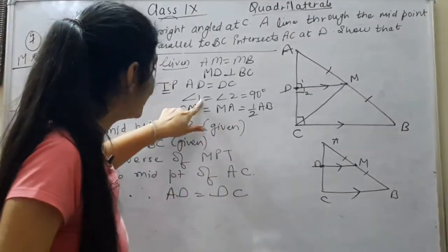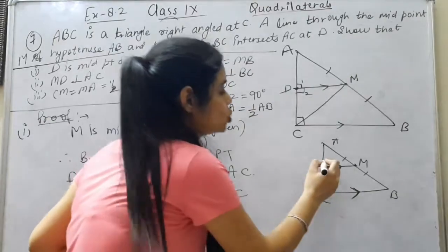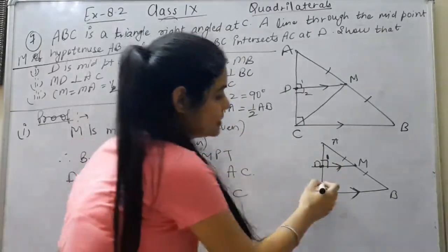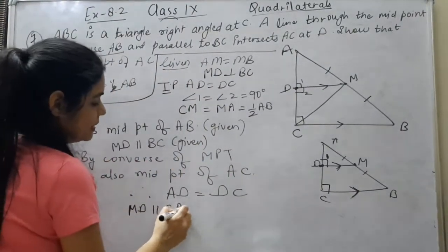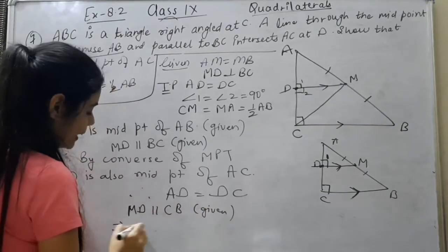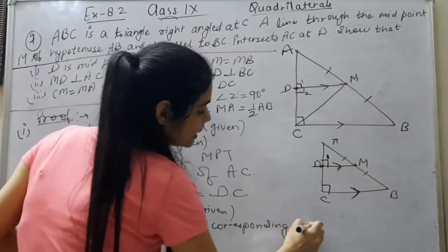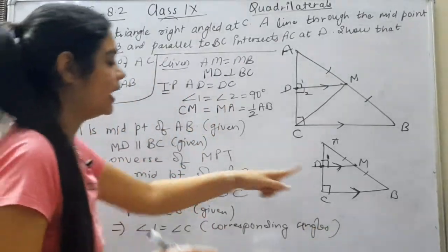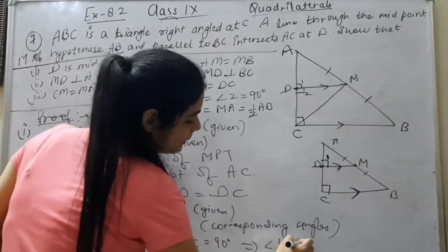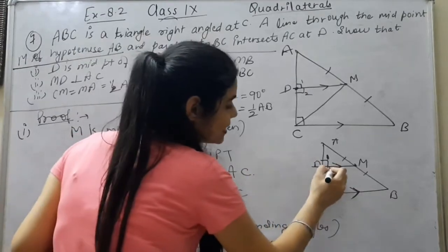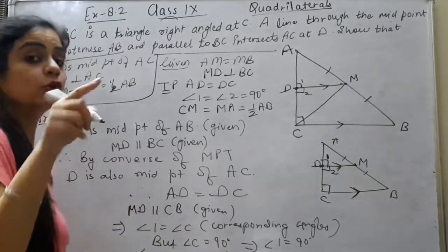Second part: we have to prove that angle 1 and angle 2 are 90 degrees. When these two are parallel, and I have taken angle 1, will it be corresponding to angle C? It will. What will I write? MD is parallel to CB given. So angle 1 equals angle C, corresponding angles. And if this is corresponding and angle C is 90, but angle C is 90, so angle 1 is also 90. And angle 1 is 90, but what is angle 1 plus angle 2? 180 degrees, linear pair.